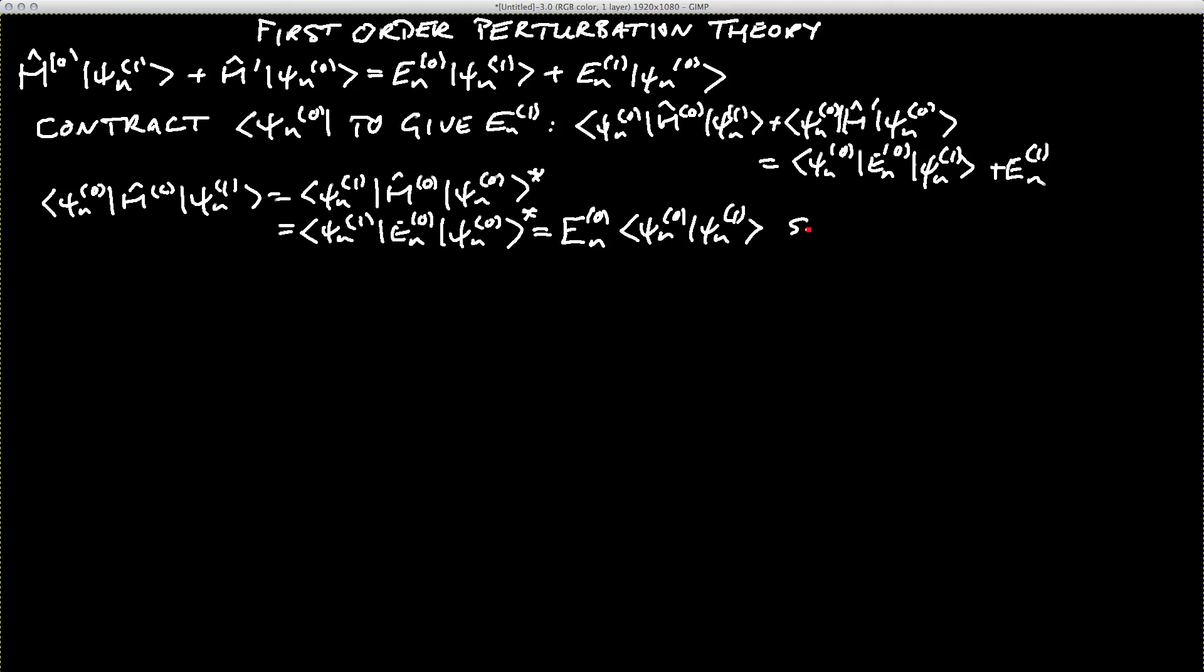And that will cancel with the first term on the right-hand side. So eventually, we find En of 1 is equal to bra psi n of 0, h prime, ket psi n of 0. In other words, if we calculate the expectation value of the perturbation for a given eigenstate of the original system, that will give us the first-order change in the energy.